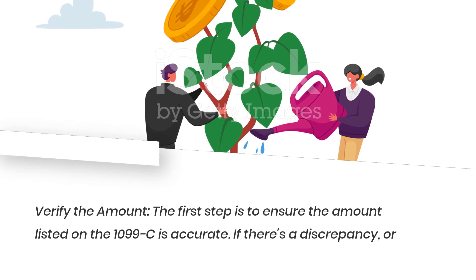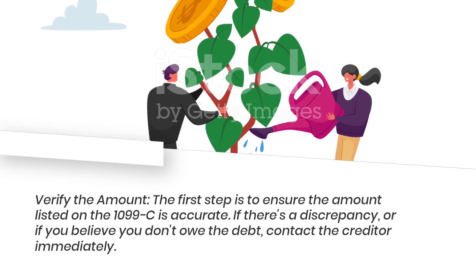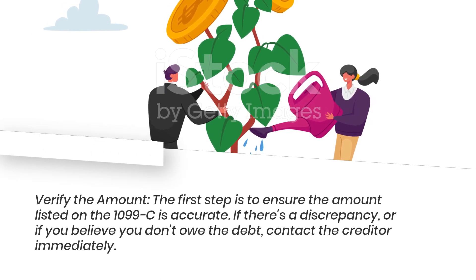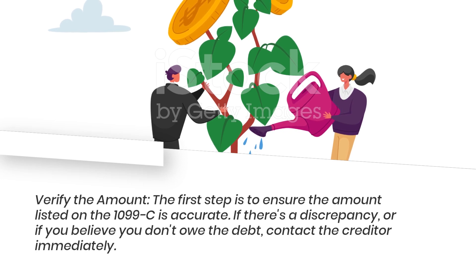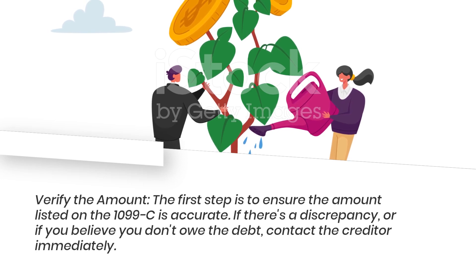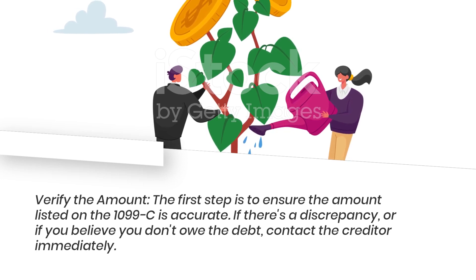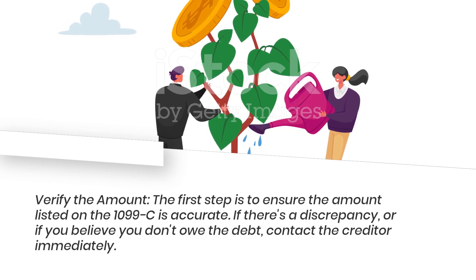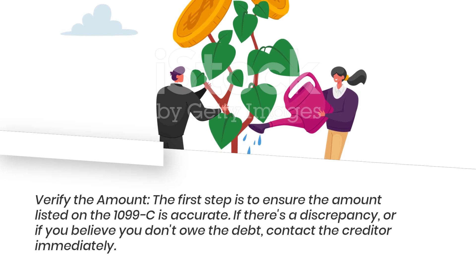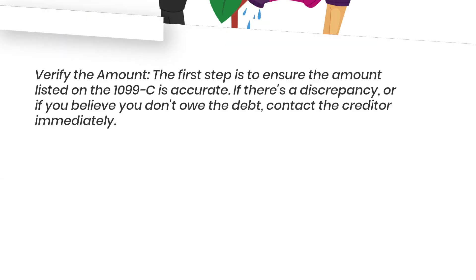Verify the amount. The first step is to ensure the amount listed on the 1099-C is accurate. If there's a discrepancy, or if you believe you don't owe the debt, contact the creditor immediately.